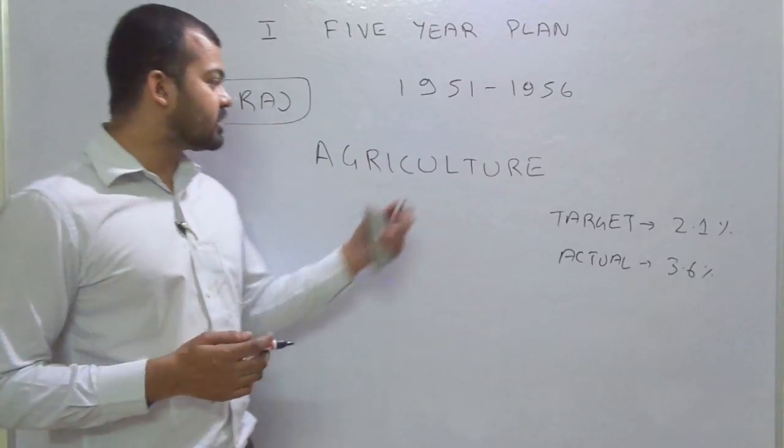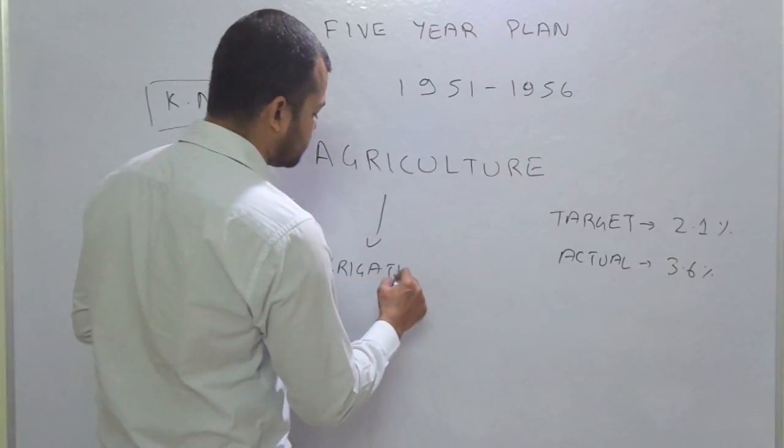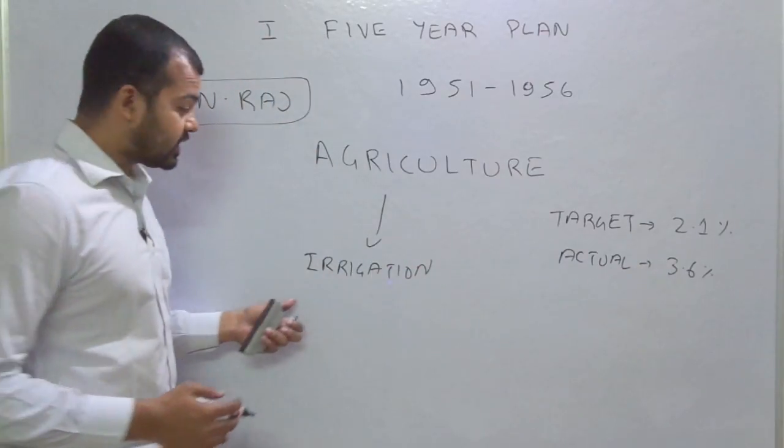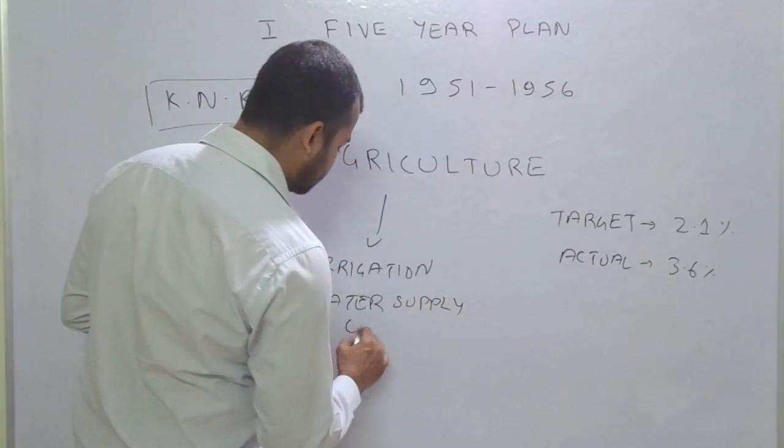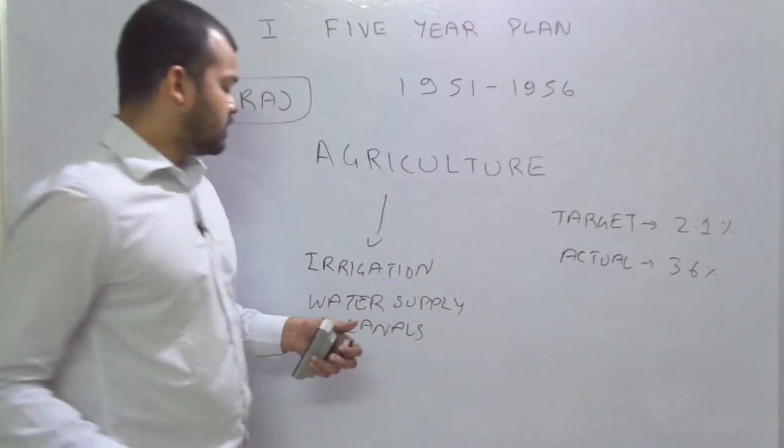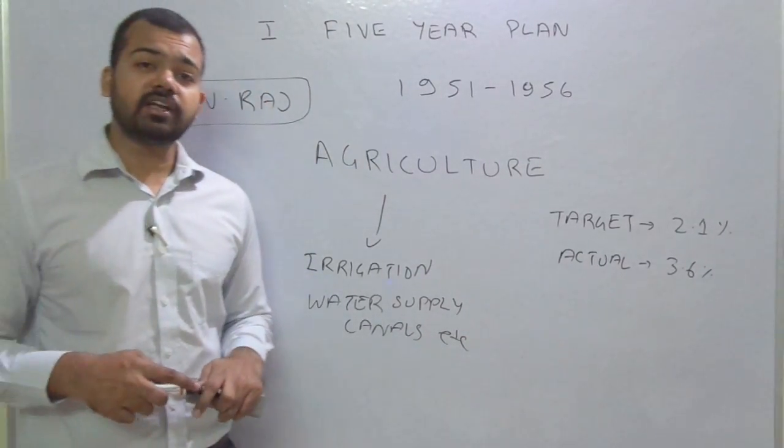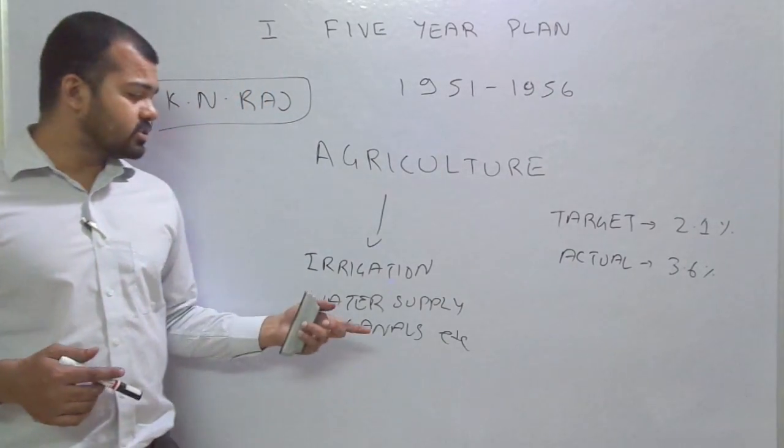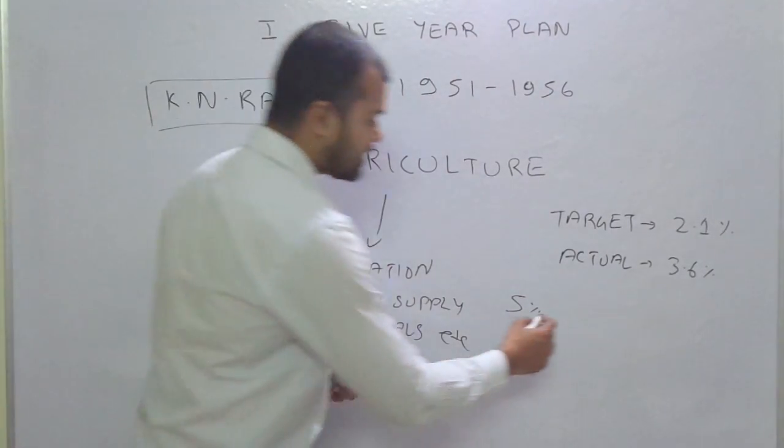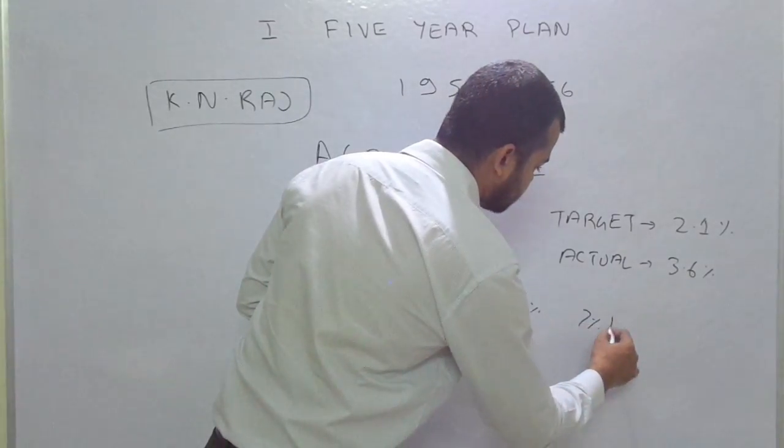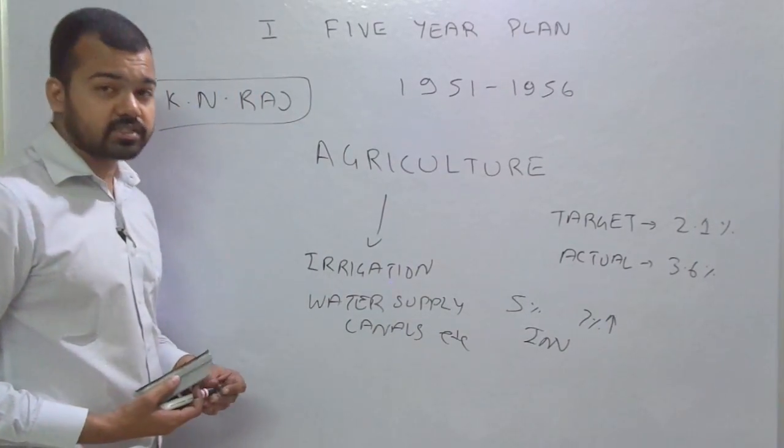The major highlights of this plan focused on agriculture sector. In order to improve agriculture, we needed to develop irrigation facility. So we focused on irrigation, water supply, canals etc. Government set the target to invest more. The investment rate was 5% at the time of 1951, government wanted to increase it to 7%.